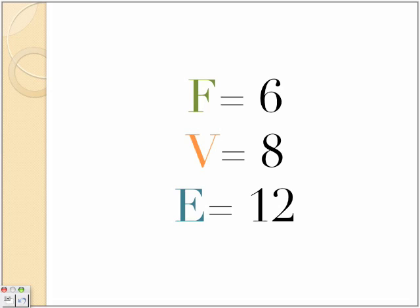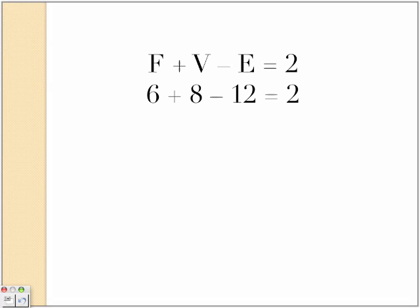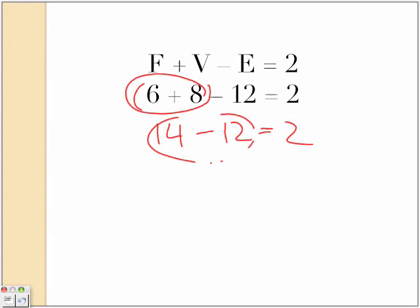So F equals 6, V equals 8, and E equals 12. So we're going to try that. I've already started it by putting 6 plus 8 minus 12 equals 2. So we're going to find out if that creates a polyhedron. So 6 plus 8 equals 14, and minus 12 equals 2. And 14 minus 12 equals 2 equals 2. And 2 equals 2, yeah, are equal, so we know that this is a polyhedron.